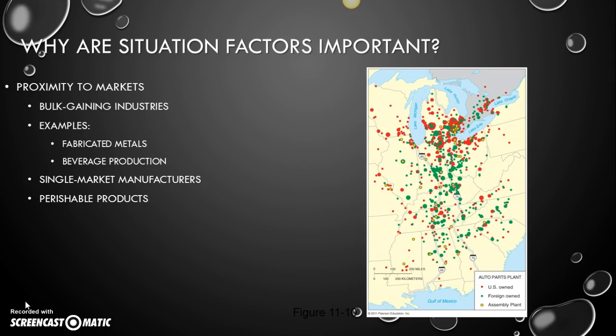Bulk gaining industries want to be close to major thoroughfares where they can move things in and out easily and cheaply, and they want to be as close to their markets as possible, because transportation costs matter. Great examples of bulk gaining industries include fabricated metals — cars are a great example — meaning components that are cut and used in very specific ways.